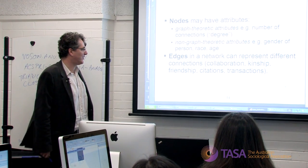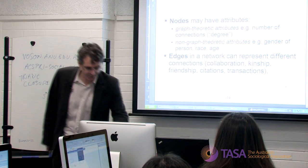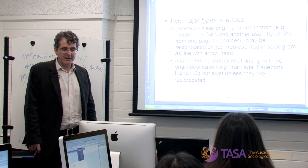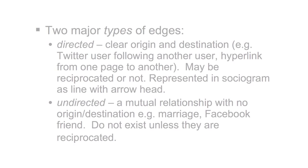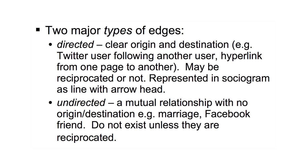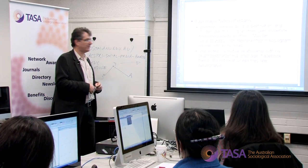Edges in a network can represent different types of connections: collaboration, kinship, friendship, citations, etc. There are two major types of edges. Directed edges have a clear origin and destination — for example, a Twitter user following another user — represented as a line with an arrow, and they may or may not be reciprocated. Undirected edges represent a mutual relationship with no origin or destination — for example, marriage or a Facebook friendship. A Facebook friendship doesn't exist until the other person reciprocates it, so from that point of view it's a mutual relationship.